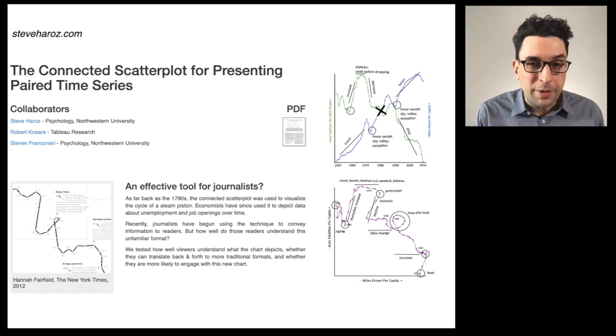The other neat part about this website is that Steve Haroz set up a nice JavaScript demonstration where you can actually move the points in a connected scatter plot or its equivalent line graph and see those same points move in the other kind of graph type. This really helped me work out in my own head how these graph types are related, this dynamic interaction.